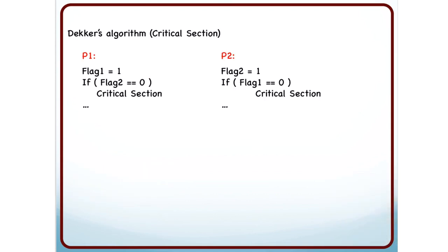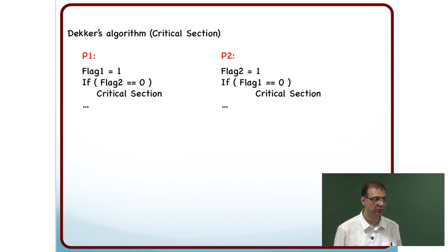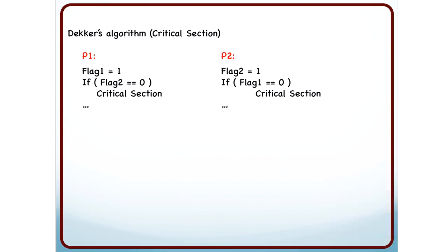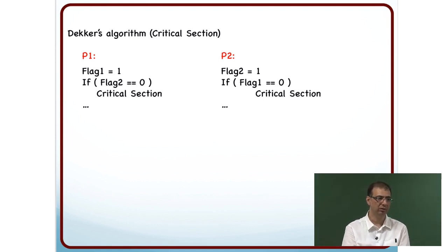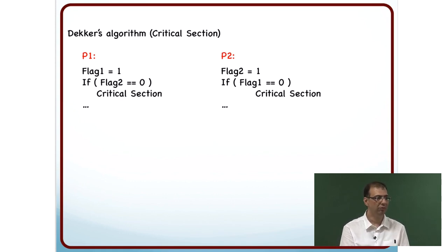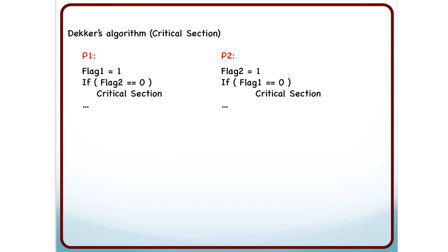Let us try to fix Decker's algorithm for critical sections. This is similar to the code we saw, but now meant for critical sections. We are no longer in the sequential consistency model — we are in the weak ordering model where the compiler is allowed to move things around. In OpenMP, where do we have to introduce the flush instruction so that the compiler does not move the flag assignment down and allow both threads to enter the critical section?